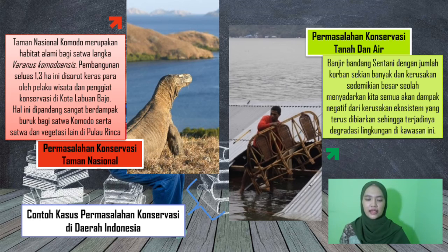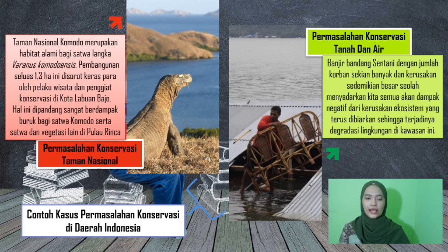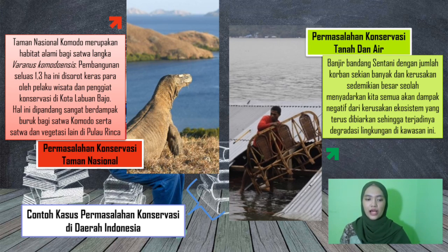Environmental degradation in the Sentani area serves as a warning about the importance of maintaining environmental quality and conducting soil and water conservation. There are three methods of soil and water conservation. The first uses physical methods — processing the soil itself — such as contour tillage, ditches, terracing, and irrigation channels. The second uses vegetative methods. The third uses chemical methods, which involve the use of chemical materials, both organic and inorganic, to preserve the soil.